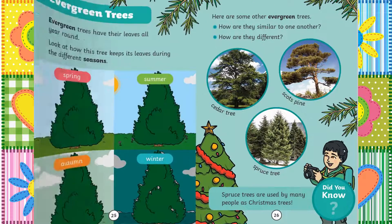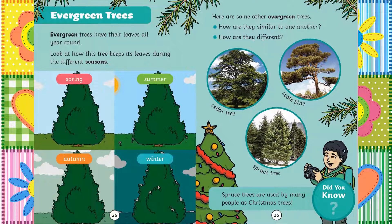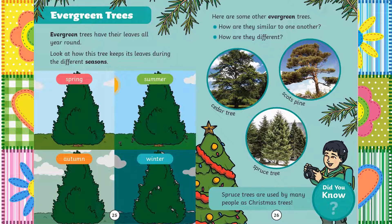Evergreen trees. Evergreen trees have their leaves all year round. Look at how this tree keeps its leaves during the different seasons. Spring, summer, autumn, winter — all the same. Here are some other evergreen trees. How are they similar to one another? How are they different? Cedar tree, Scots pine, and the spruce tree. Did you know spruce trees are used by many people as Christmas trees?